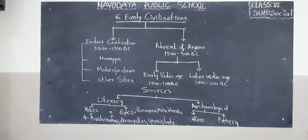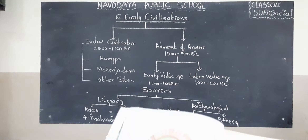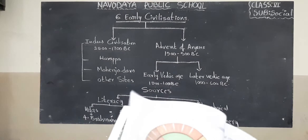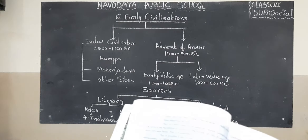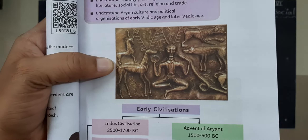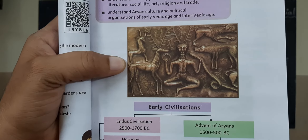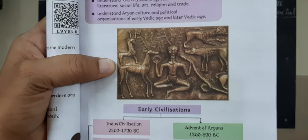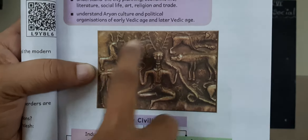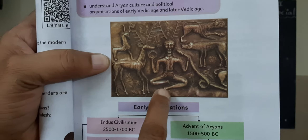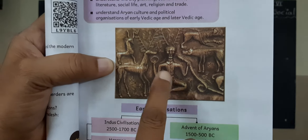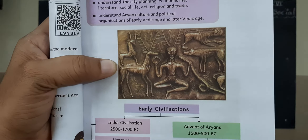Now I want to show you some pictures about this lesson. Children, look at page number 63 in this lesson. Here is Shiva — they worshipped Shiva as their god. Next, turn the page. Here are the remains of the Indus Valley town.